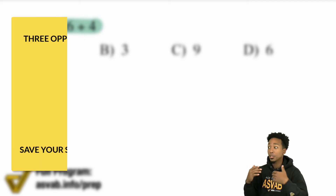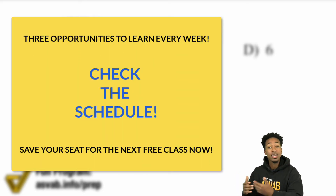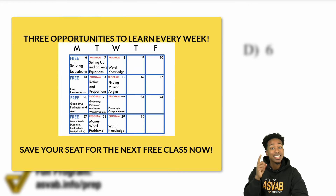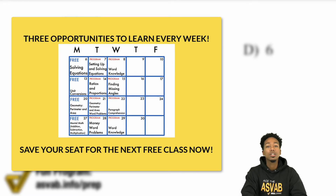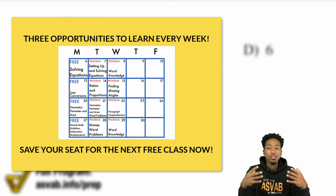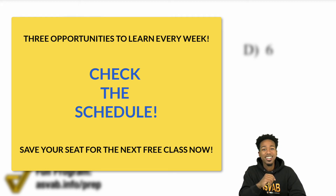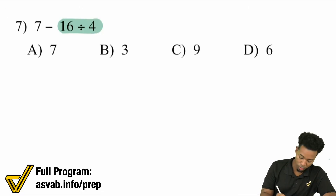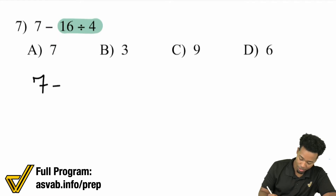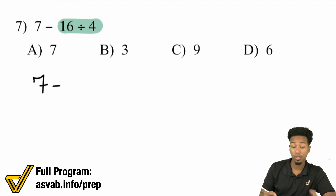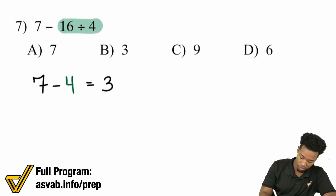If you're watching this, you've likely already been to one of my classes. If you haven't, remember to check the schedule — the link is right up there and in the description of this video, so you can see when my free classes and access program classes are. Let's get back to the action. So 7 minus 16 divided by 4 — 16 divided by 4 is 4, and 7 minus 4 is 3. And that's answer choice B.